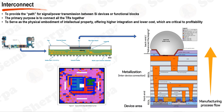In summary, the process of semiconductor interconnection spans multiple levels of scale and complexity, from the macro scale of the PCB to the nano scale of the transistor. It serves as the physical embodiment of intellectual property, offering higher integration and lower cost, which are critical to profitability. It carries various types of signals and power, including digital I/O, analog I/O, and memory power, ensuring efficient operation of the AP chip and the overall electronic system.